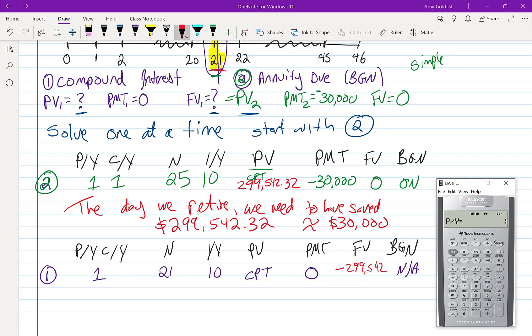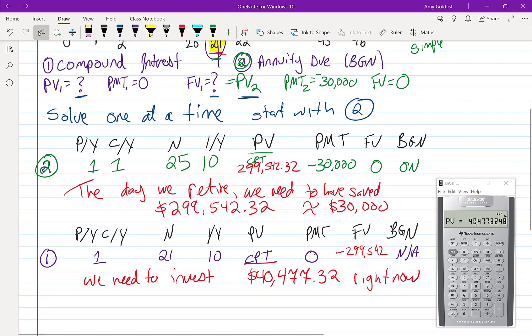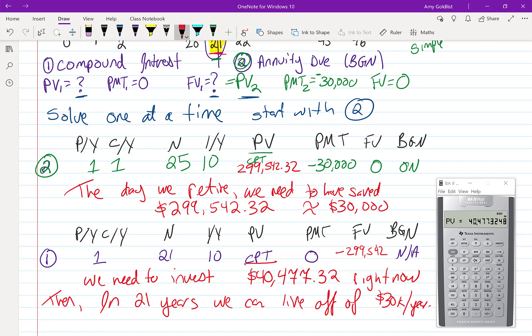Begin doesn't matter. So I'm going to leave it. PY CY should stay the same. N is now 21. Our interest rate, recall IY, is still 10. Our payment is zero. That's an important one. Remember our future value has changed. So let's compute that present value. And we find out that we need to invest $40,477.32 right now. If we do that, we put $40,000 in today, we will have enough so that we can have $30,000 a year for 25 years. So $30,000 per year. So that is great.